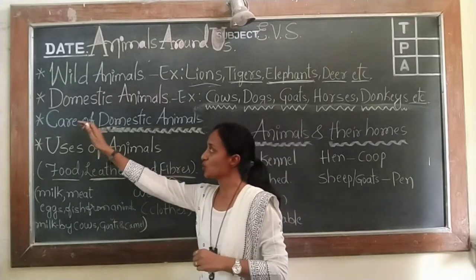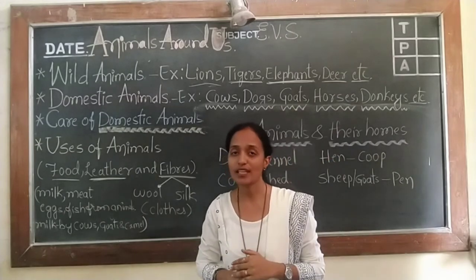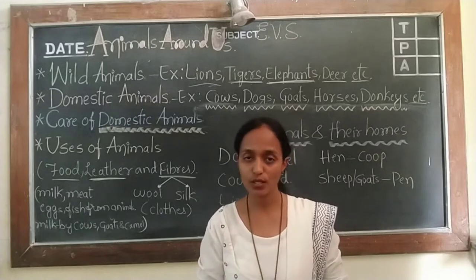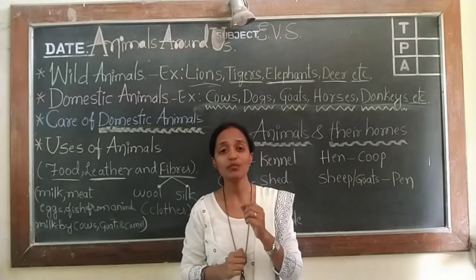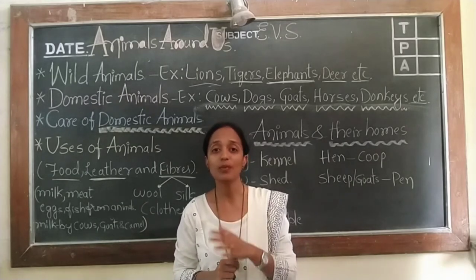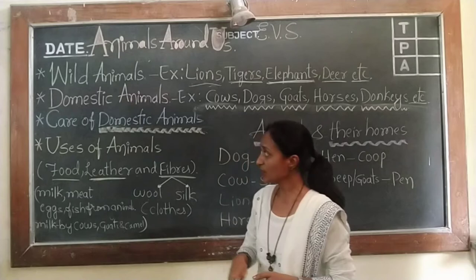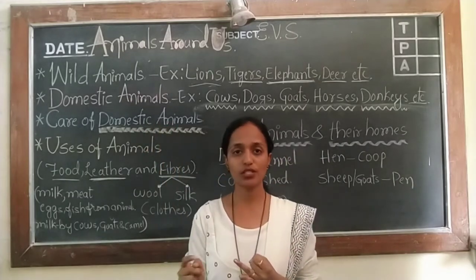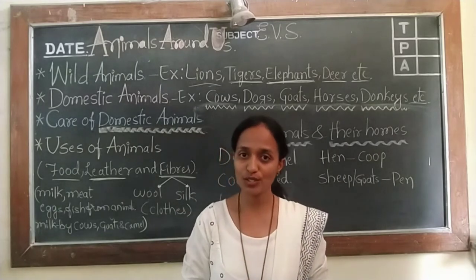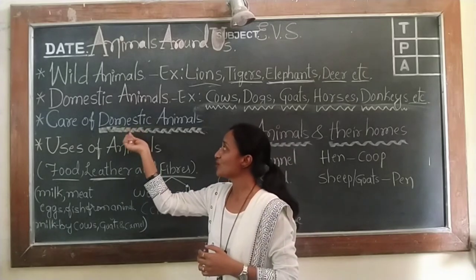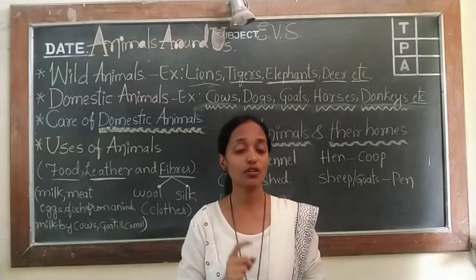Let us know how to take care of domestic animals. Domestic animals are very useful to us in many ways, so we should take care of them. We should keep them in clean places. We should provide them good food and clean water. If they are ill, we have to take them to the veterinary doctor. We should treat them in a friendly way and we should not treat them badly.